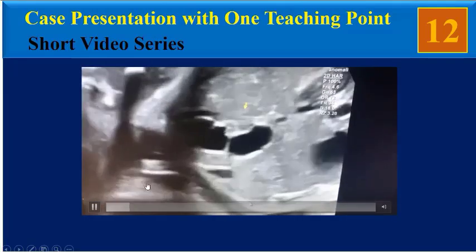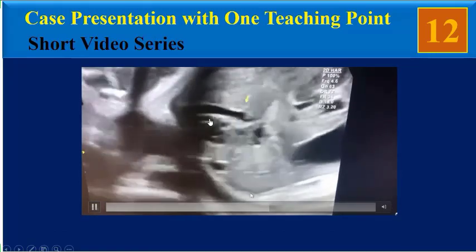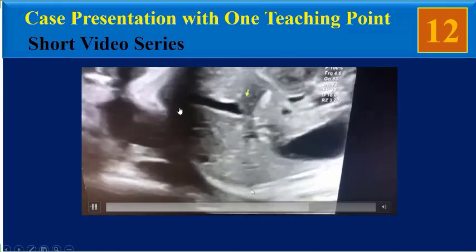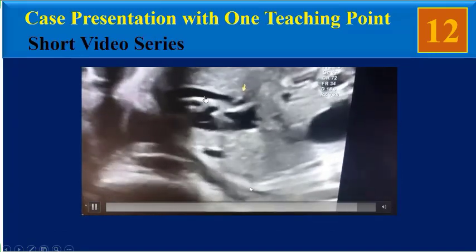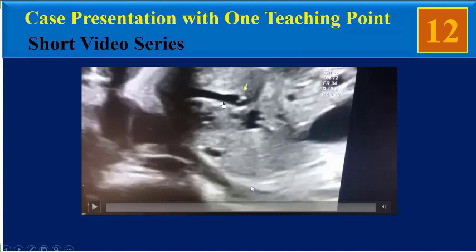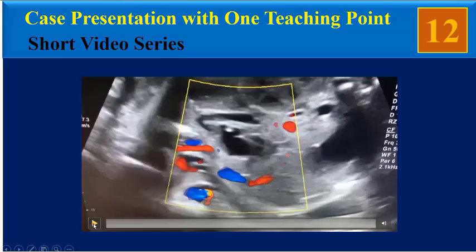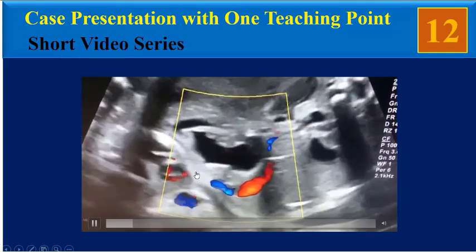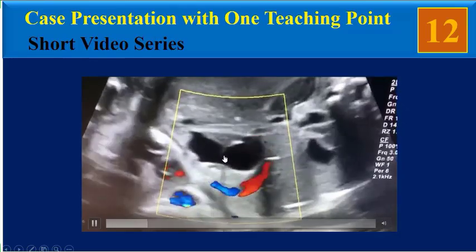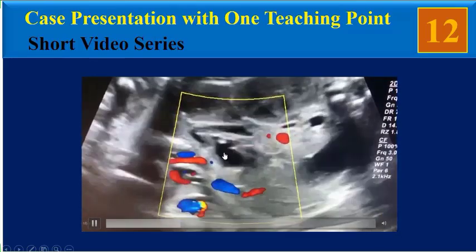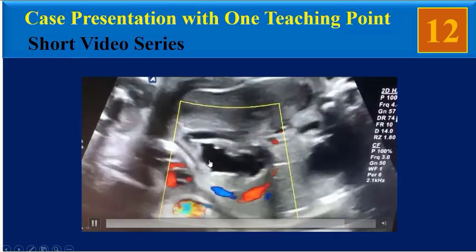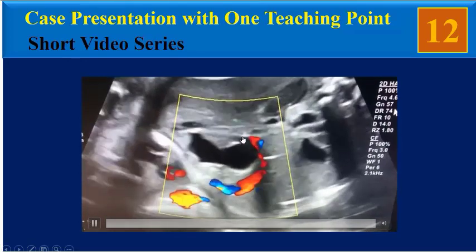In this ultrasound clip, we found that the saccular cystic structure is connected to the common bile duct. At the distal end of the CBD, we found a shadowing line representing a choledochal stone. Another color Doppler ultrasound image revealed it has no vascularity and is a cystic structure with connection to the common bile duct.